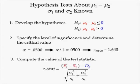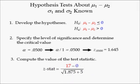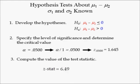In step 3, we compute the value of the test statistic. Substituting x-bar 1 equal to 275, x-bar 2 equal to 258, d0 equal to 0, population 1 standard deviation of 15, population 2 standard deviation of 20, sample size 1 equal to 120, and sample size 2 equal to 80, yields 17 minus 0 in the numerator and the square root of the sum of 1.875 and 5 in the denominator — or 17 yards divided by 2.62 yards, the standard error of the difference. Hence, the z-stat is equal to 6.49.